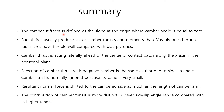Here is the summary. Camber stiffness is defined as the slope at the origin where camber angle is equal to zero. Radial tires usually produce lesser camber thrust and moment than cross-ply ones because radial tires have a flexible carcass. Camber thrust acts laterally ahead of the center of the contact patch along the x-axis in the horizontal plane. The direction of camber thrust with negative camber is the same as that due to side slip angle. Camber torque is normally ignored because its value is very small. Resultant normal force is shifted to the cambered side by the length of the camber arm. The contribution of camber thrust is more distinct in the lower side slip angle range compared with the higher range.